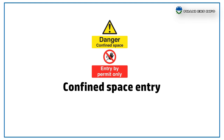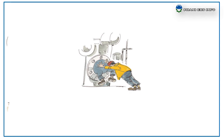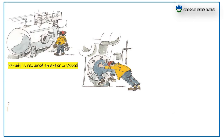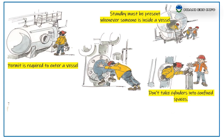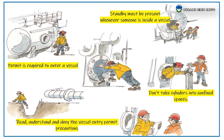Confined space entry: If you have to work in confined spaces, follow these rules. A permit is required to enter a vessel or confined space. A standby must be present whenever someone is inside the vessel. Do not take cylinders into confined spaces. Remove gas hoses before breaks. Read, understand, and obey the vessel entry permit precautions.